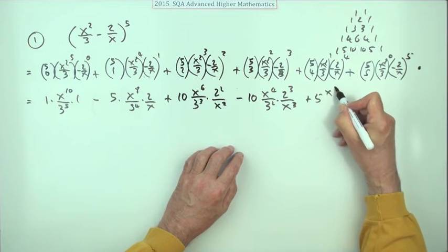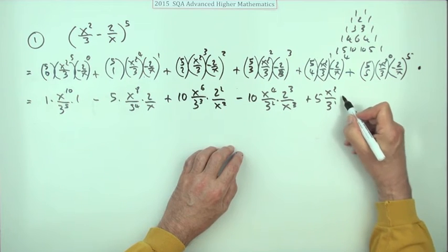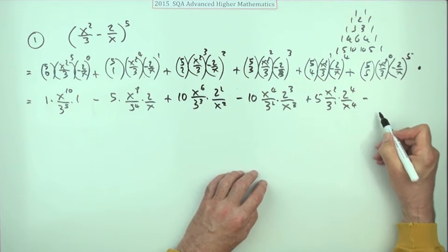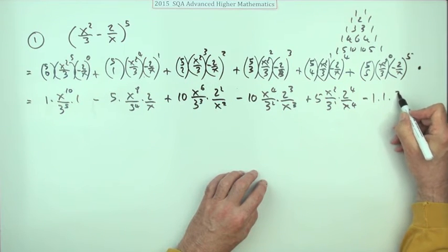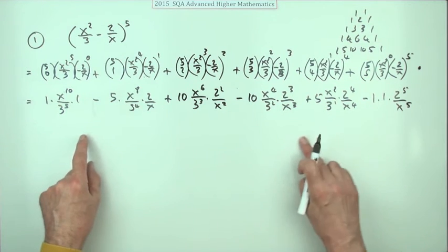Then the next one is back to a plus because there's an even power, and that drops to a 5. That's an x squared, and that's a 3 just to the power 1, and that's a 2 to the power 4, and that's an x to the power 4. Finally, that's a negative again - an odd power - and that's back to a 1. That's a 2 to the 5 over x to the 5.